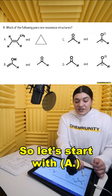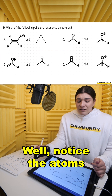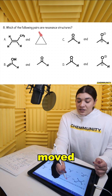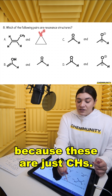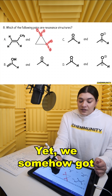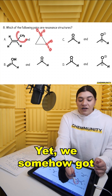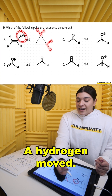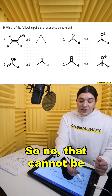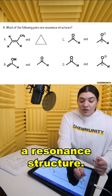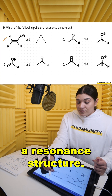Let's start with A. Notice the atoms moved because these are just CHs, yet we somehow got a CH3. A hydrogen moved, so no, that cannot be a resonant structure.